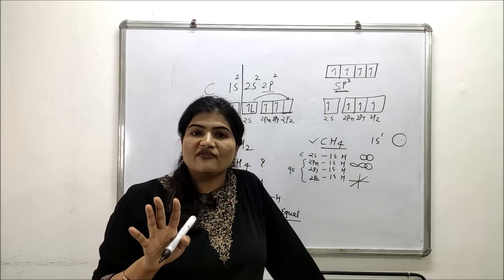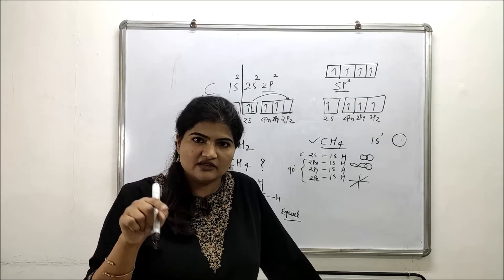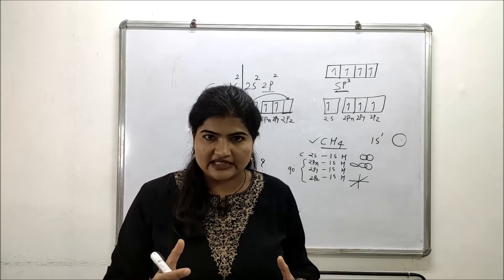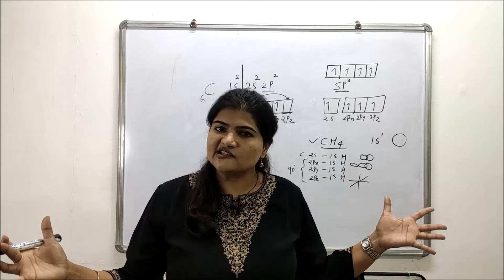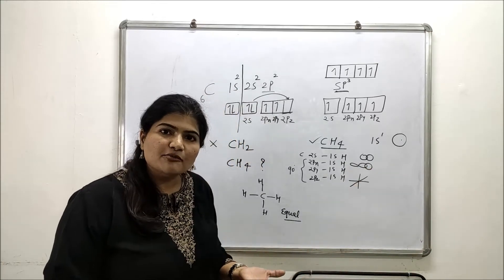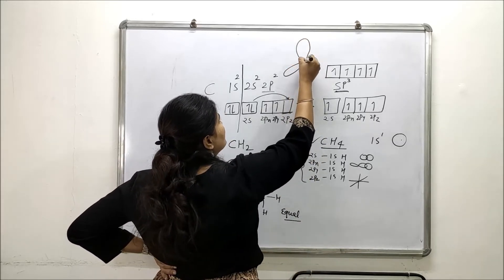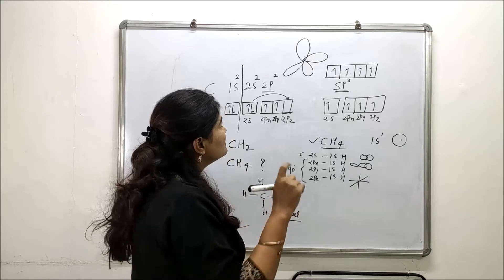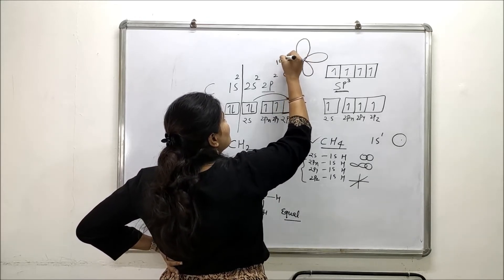All four sp3 hybrid orbitals each contain one unpaired electron, and since electrons repel each other, they adopt a geometry in which they stay as far apart as possible to minimize repulsion. The resulting arrangement is a regular tetrahedron — three lobes below like a tripod and one lobe above — with a bond angle of 109.5 degrees.